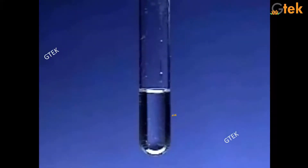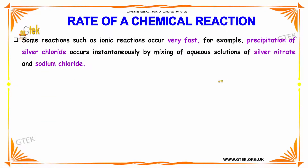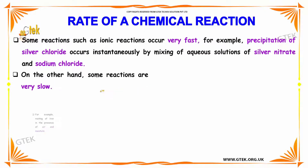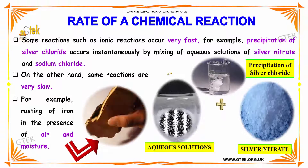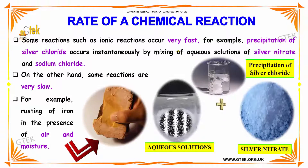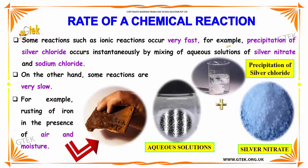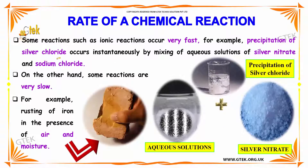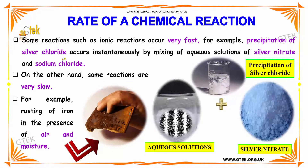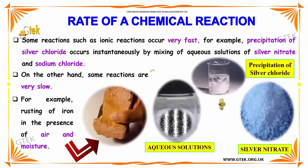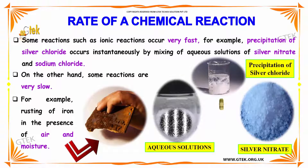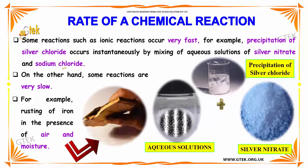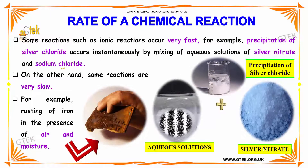After a few seconds, you are able to see the clear solution. Some reactions such as ionic reactions occur really fast. For example, precipitation of silver chloride occurs instantaneously by mixing an aqueous solution of silver nitrate and sodium chloride.